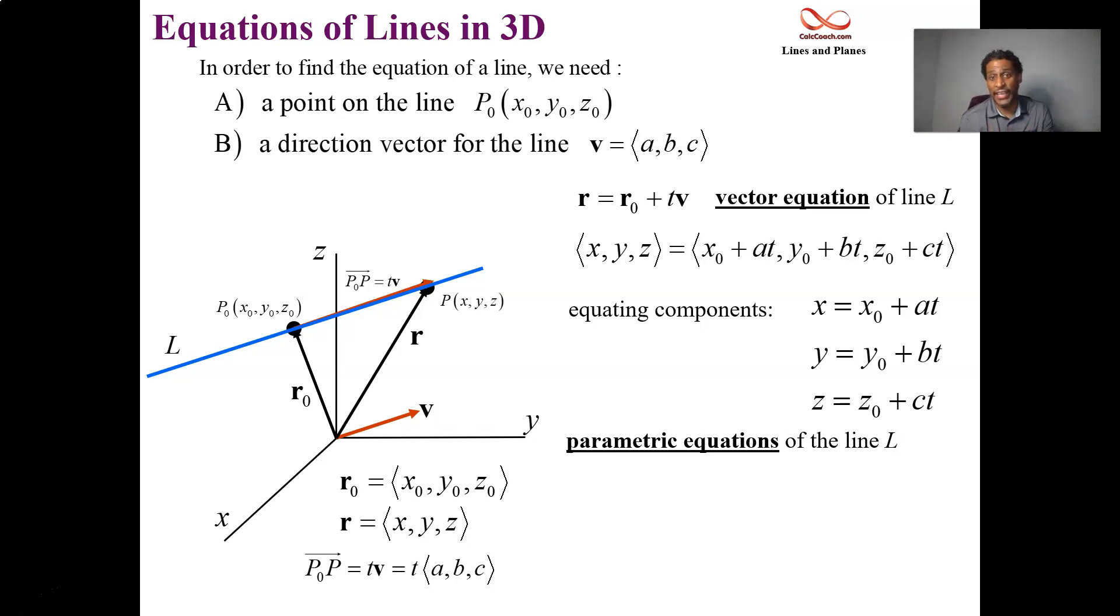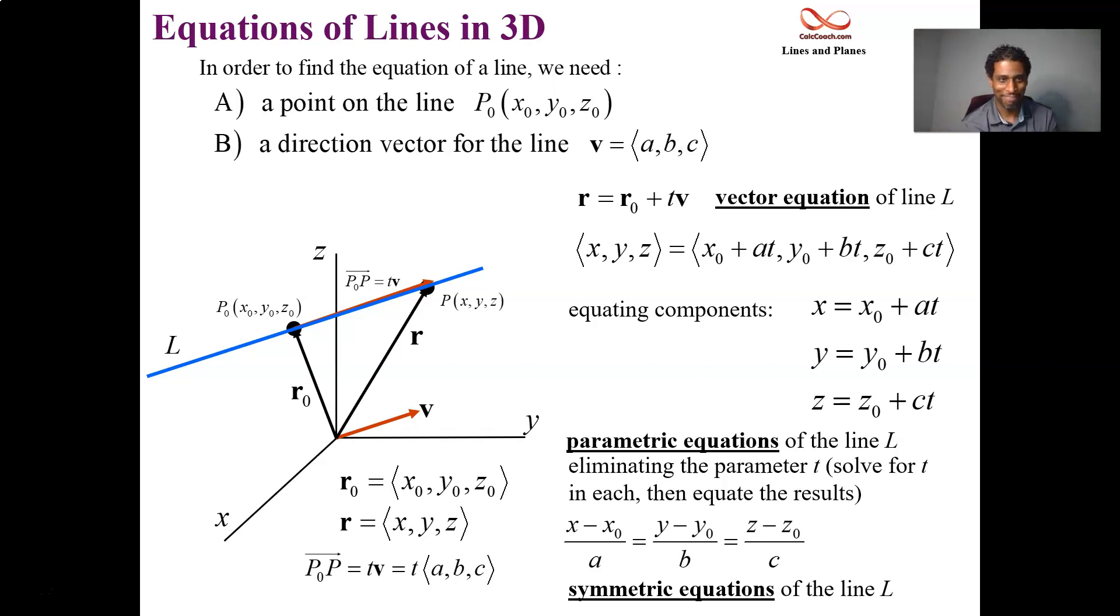If you were to take this and eliminate the parameter t, you'll solve for t in each one of them. You'll have t equals x minus x0 over A, t equals y minus y0 over B, t equals z minus z0 over C. And this set here, where we have these two equal signs and the three things all being equated to each other, that can actually be thought of as the equations of the line. The name of that one is called symmetric equations of the line. All right, great. Well, let's see it in action.